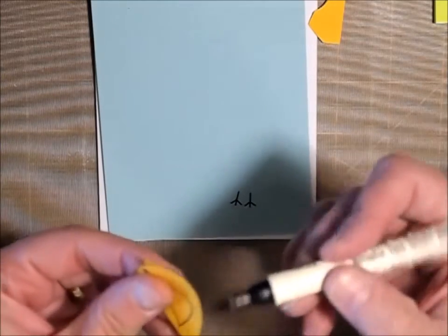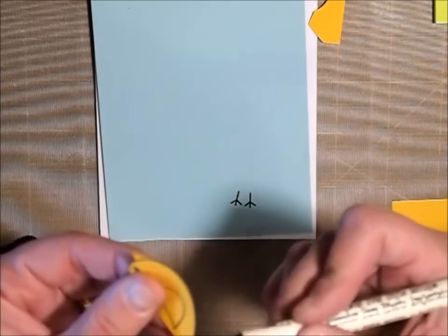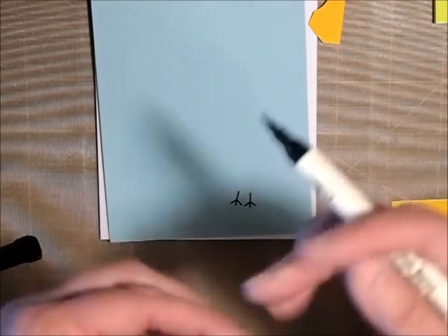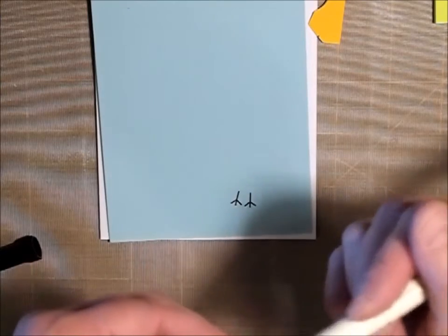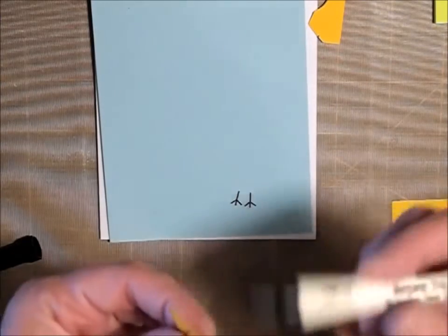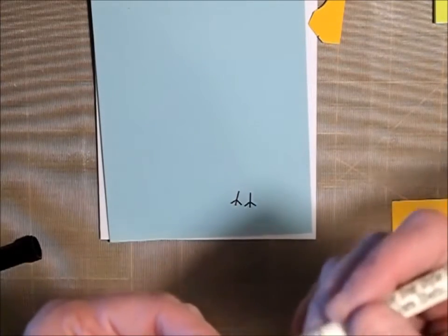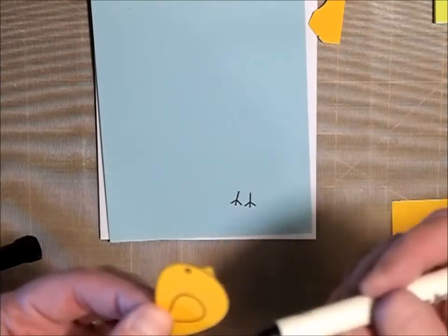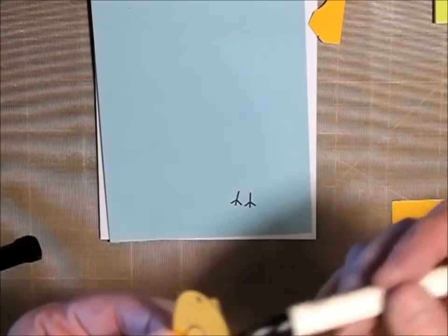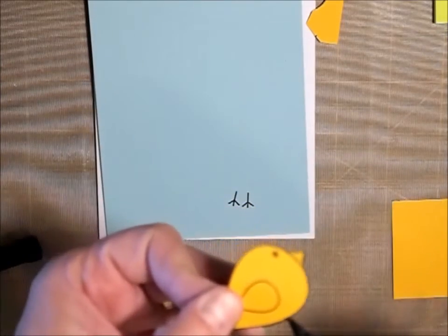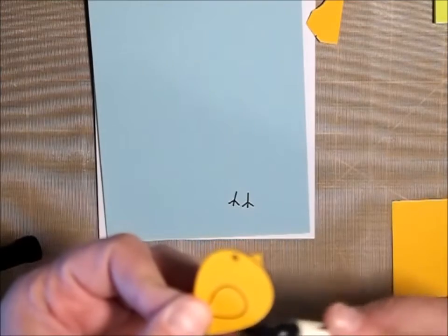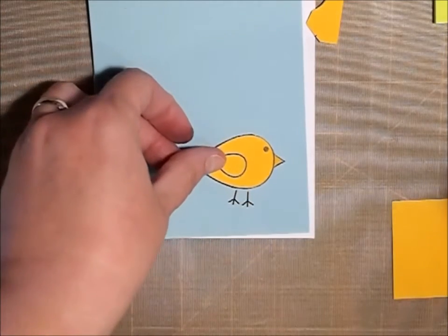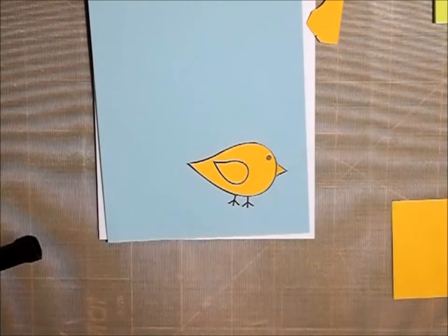Since I fussy cut and didn't get it perfect, I'm going to use my black marker and go around him. This makes him look like he was cut out perfectly. He's going to go right there. Isn't that cute?